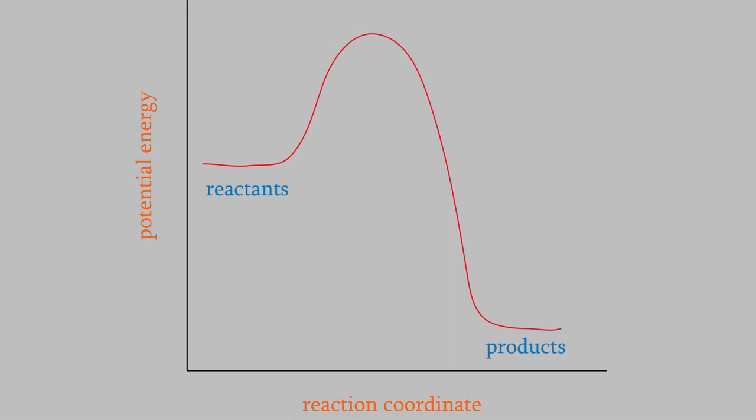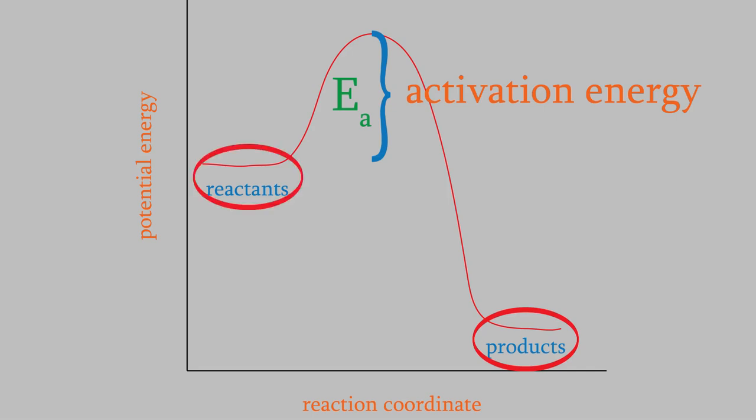So, in order for the reaction to happen, the reactant molecules must gain this amount of potential energy. The difference between these two energies is called the activation energy, and it has the symbol EA. In this particular example, notice that the products have a lower energy than the reactants. That means that overall, the molecules lose energy in this example.